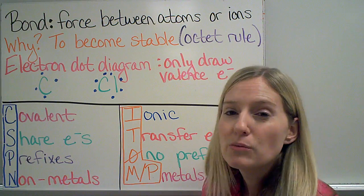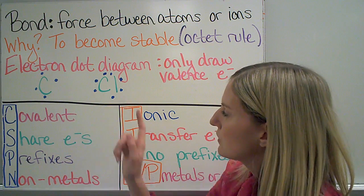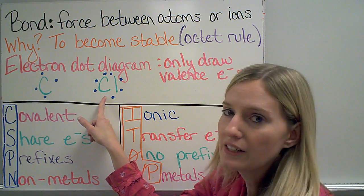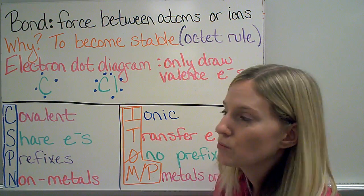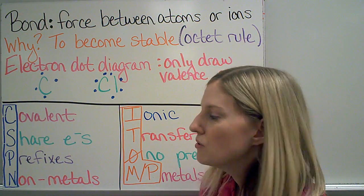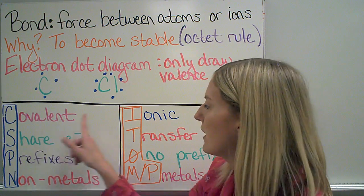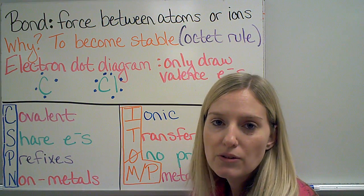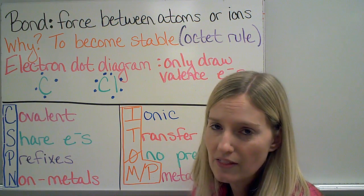It makes it really easy for me to see with chlorine, for example, that there's one missing electron, because I want to have eight — that's my octet rule. So I have two main types of bonding, and they are covalent and ionic. They are going to be essentially opposites of one another.